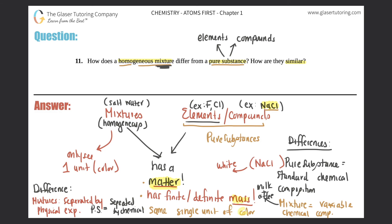To recap: the similarities between homogeneous mixtures and pure substances are that they all have matter, they all have a mass, and they're all the same color. The differences are that pure substances always have a standard chemical composition, while mixtures are variable depending on the percentage of compounds in them. Also, mixtures can be separated by physical means, but compounds can only be separated by chemical means, and elements cannot be separated at all — they're the most fundamental unit. Hope this helped!